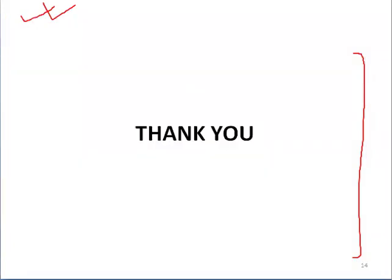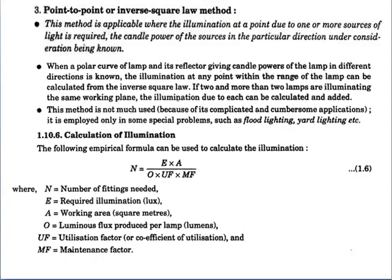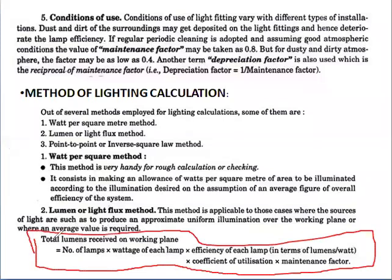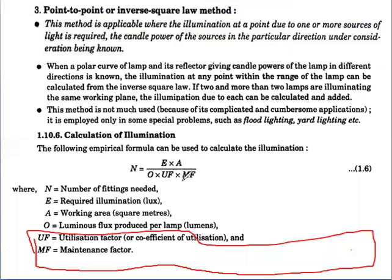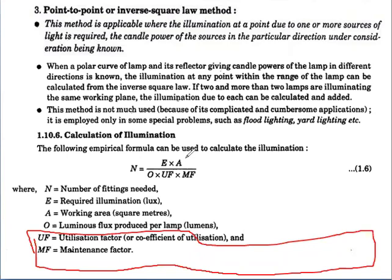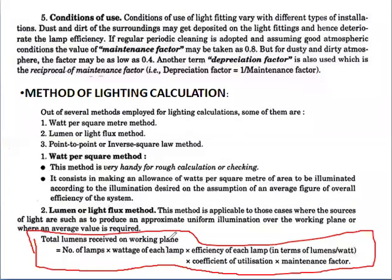That is all for today. The lumen or light flux method is the second method and is generally used for lighting calculations. From this we get the formula N = E × A / (Φ × UF × MF). The total lumens received on the working plane equals E × A, where E is the required illumination and A is the area.